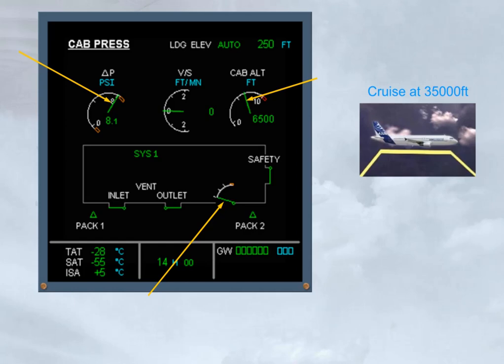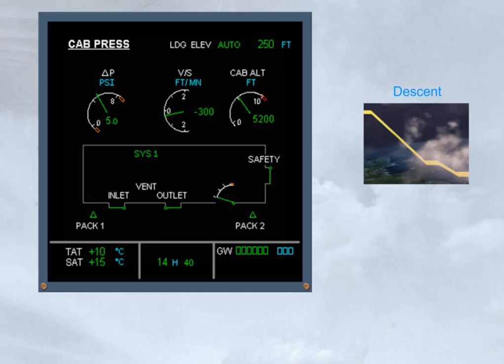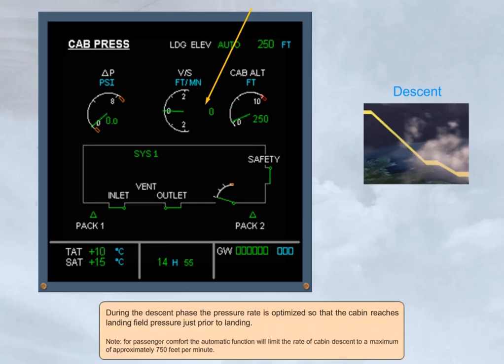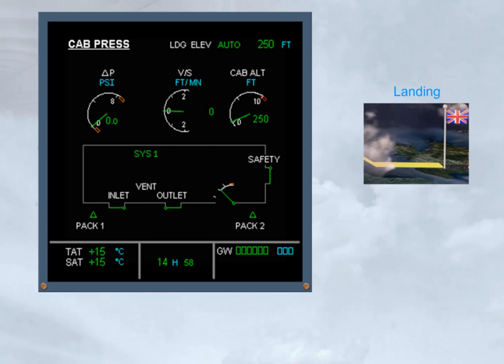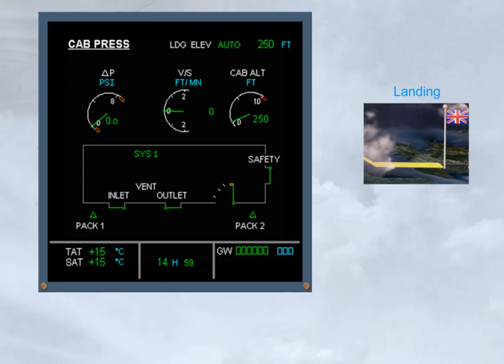In the example shown, the aircraft is in cruise at 35,000 feet. During the descent phase, the pressure rate is optimized so that the cabin reaches landing field pressure just prior to landing. For passenger comfort, the automatic function will limit the rate of cabin descent to a maximum of approximately 750 feet per minute. At touchdown, the cabin altitude should be at the airfield elevation with no residual pressure. A few seconds after touchdown, the outflow valve fully opens. A few seconds after the outflow valve is fully open, an automatic changeover of the system controllers occurs in preparation for the next flight, so that both systems are used equally.